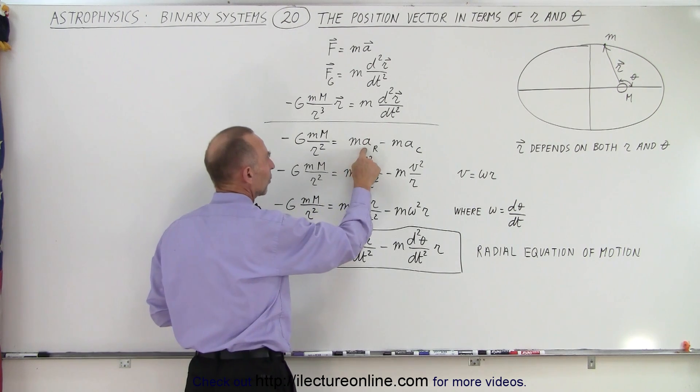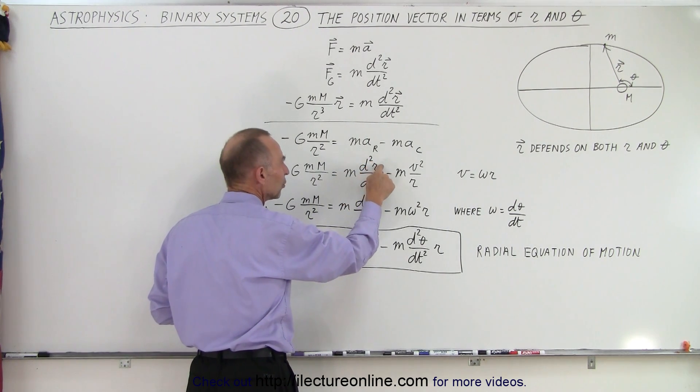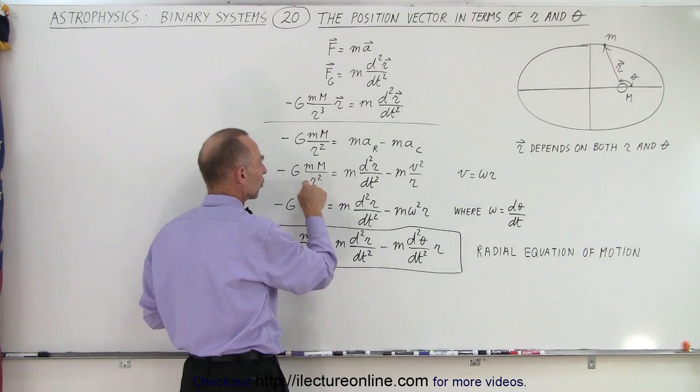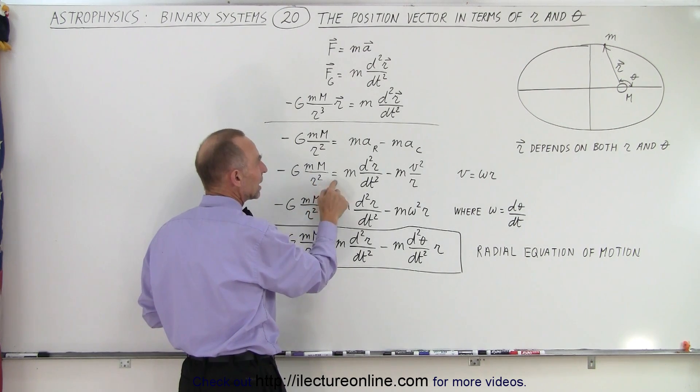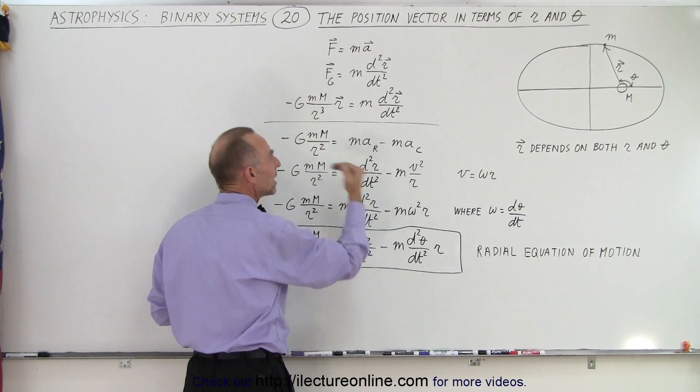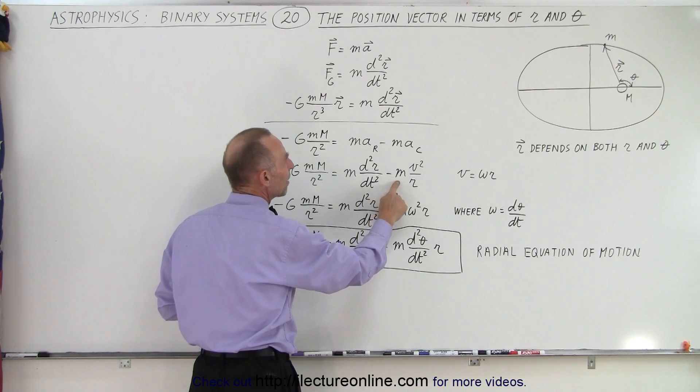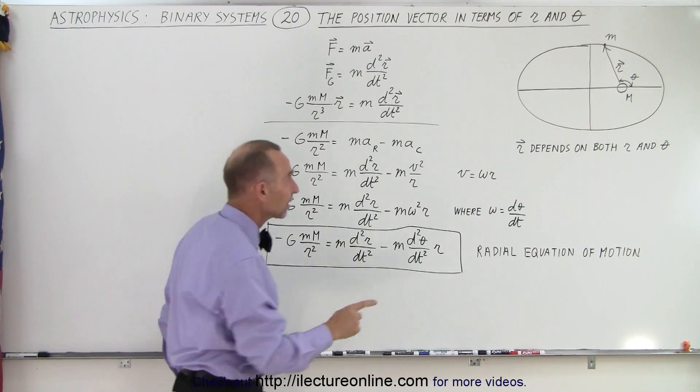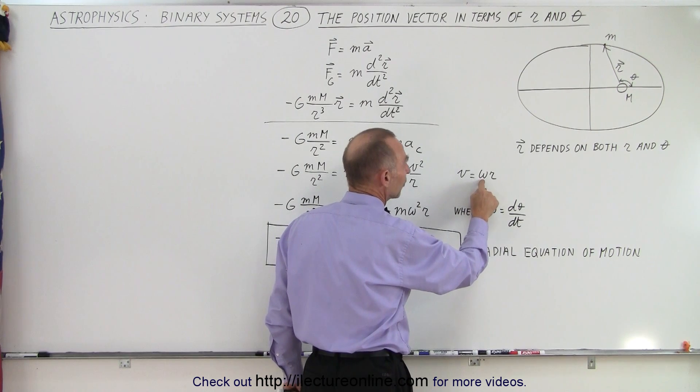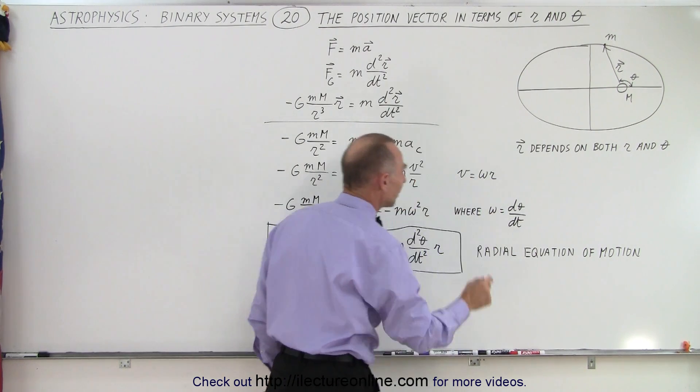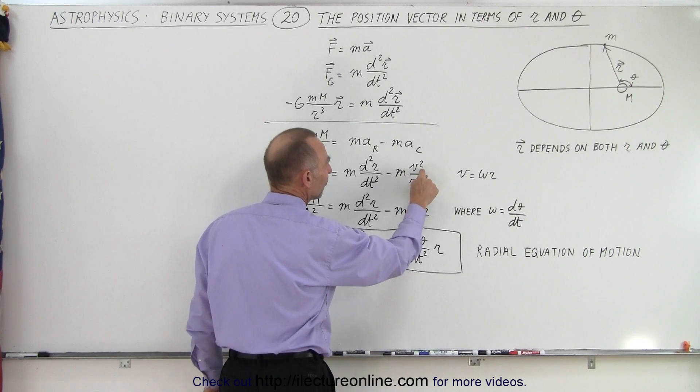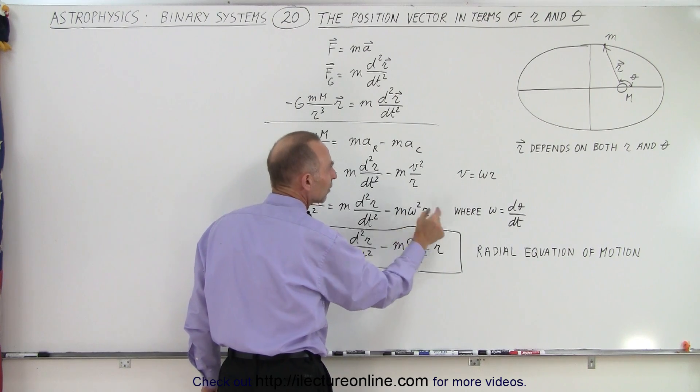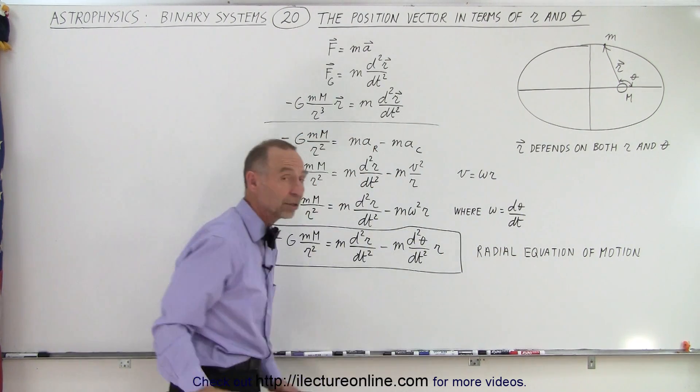Now the radial acceleration can still be expressed as the second derivative of the magnitude of r with respect to time. We end up with minus m times v squared over r, because the centripetal acceleration is v squared over r. Remember that v equals omega, the angular velocity, times the radius of that orbit. If we replace v squared by omega squared r squared, we end up with m omega squared r, where omega can be defined as the first derivative with respect to time of the angle theta.